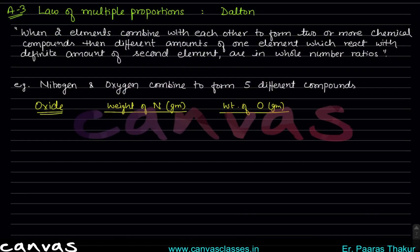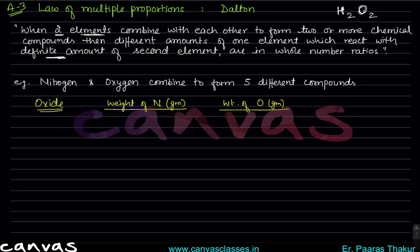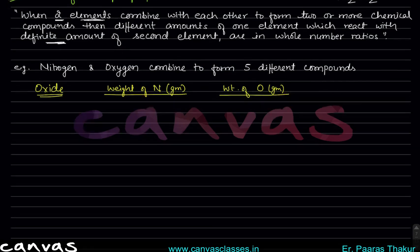Next, let us discuss the law of multiple proportions. In definite proportion we took the same compound from different sources; in multiple proportions we have two elements that combine together but form more than one compound. Reading the definition alone won't give clarity — study the examples first and the definition will make sense.